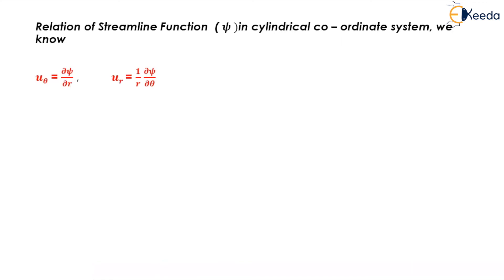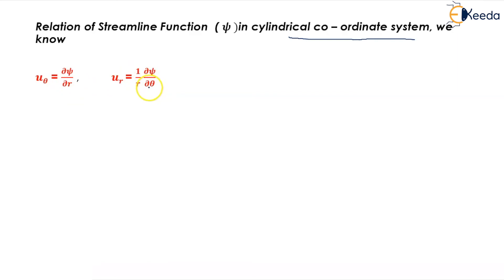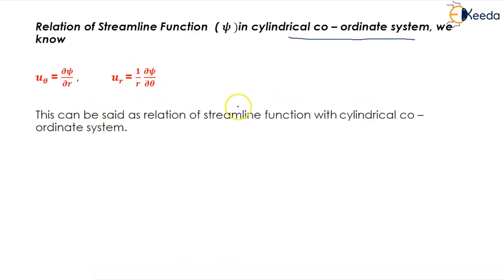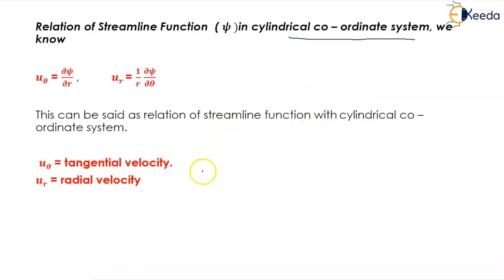Now we will learn about the relation of streamline function psi in the cylindrical coordinate system. We know u_theta = ∂ψ/∂r and ur = (1/r)(∂ψ/∂θ). This is the relation of streamline function with cylindrical coordinates, where u_theta is tangential velocity and ur is radial velocity.